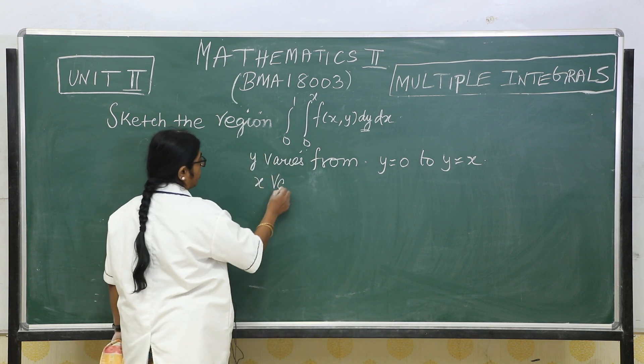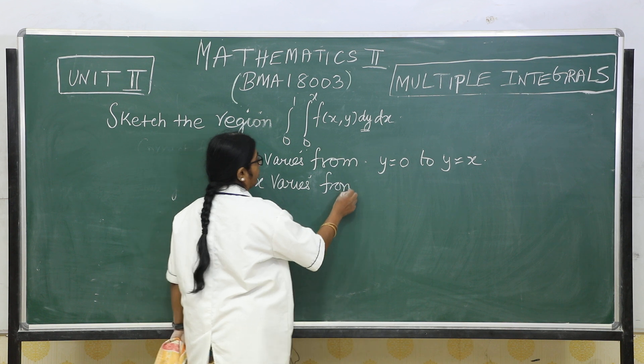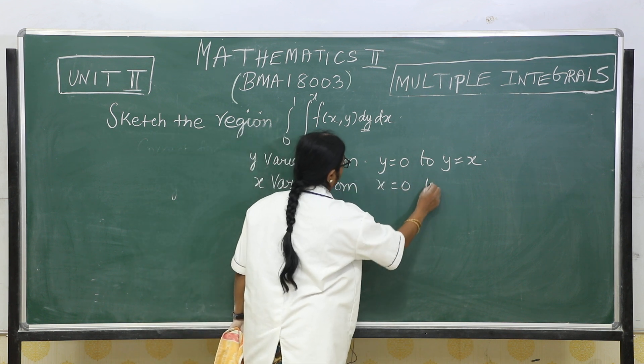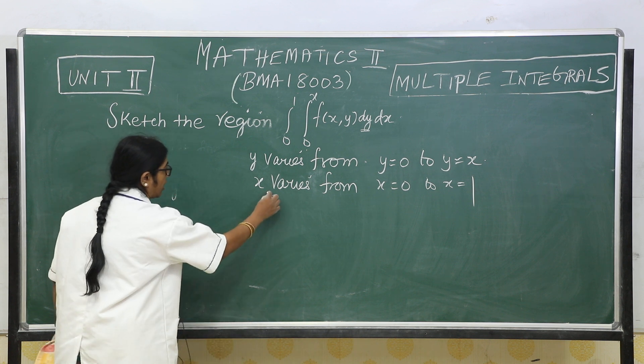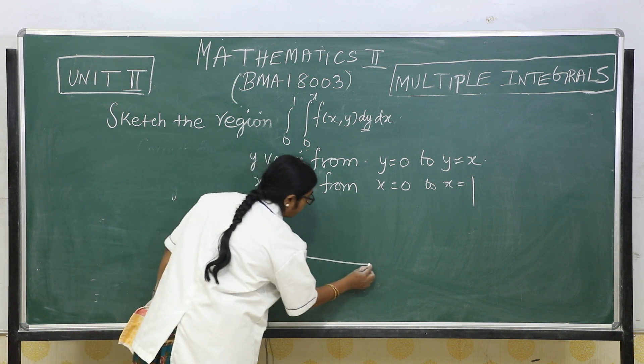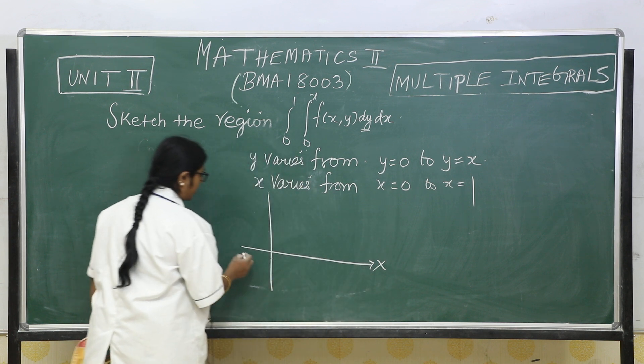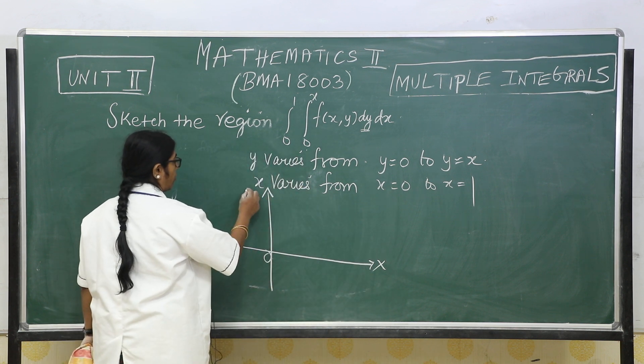x varies from x equal to 0 to x equal to 1. All that I am going to do is I am going to draw the diagram: x axis, origin, y axis.